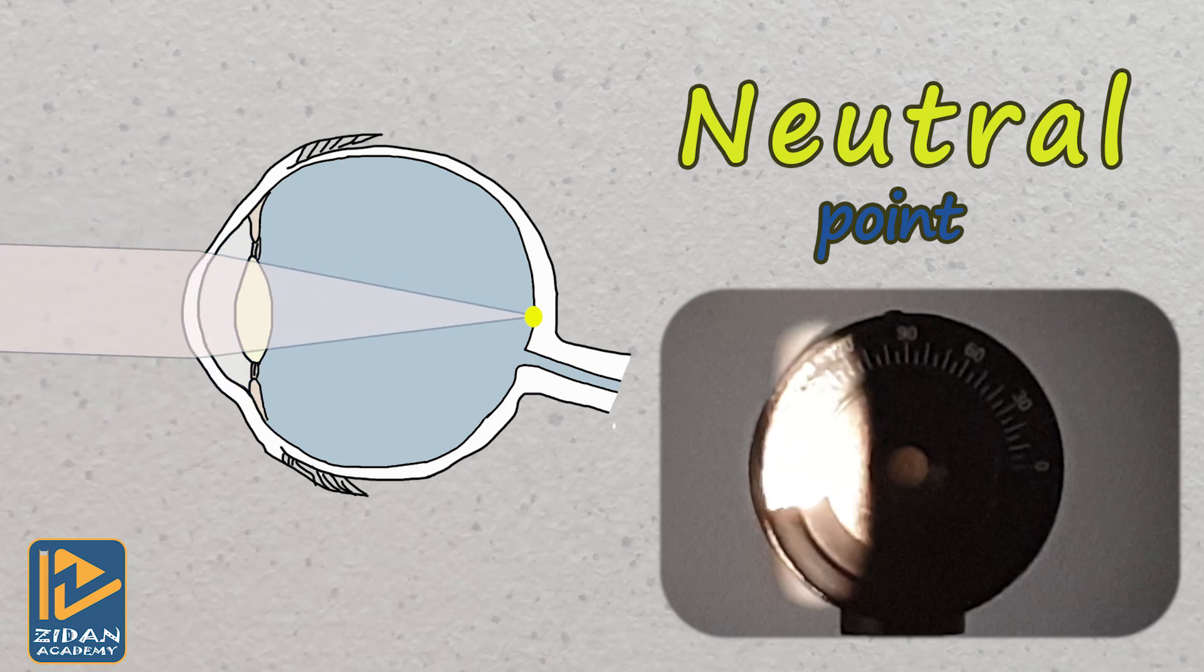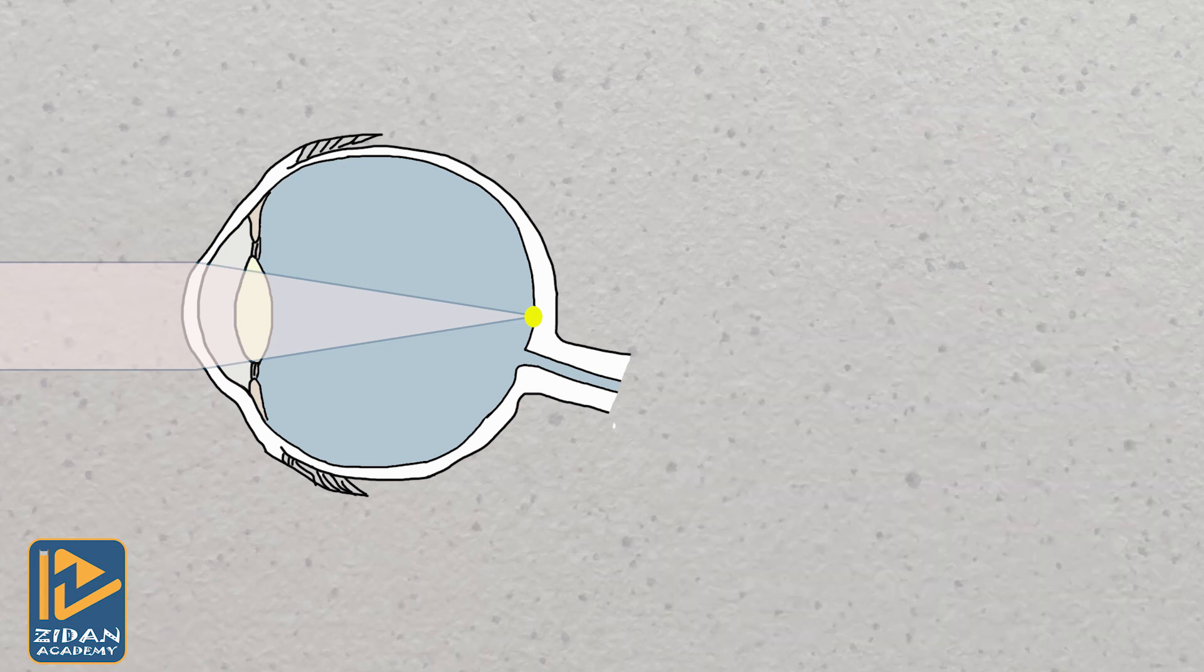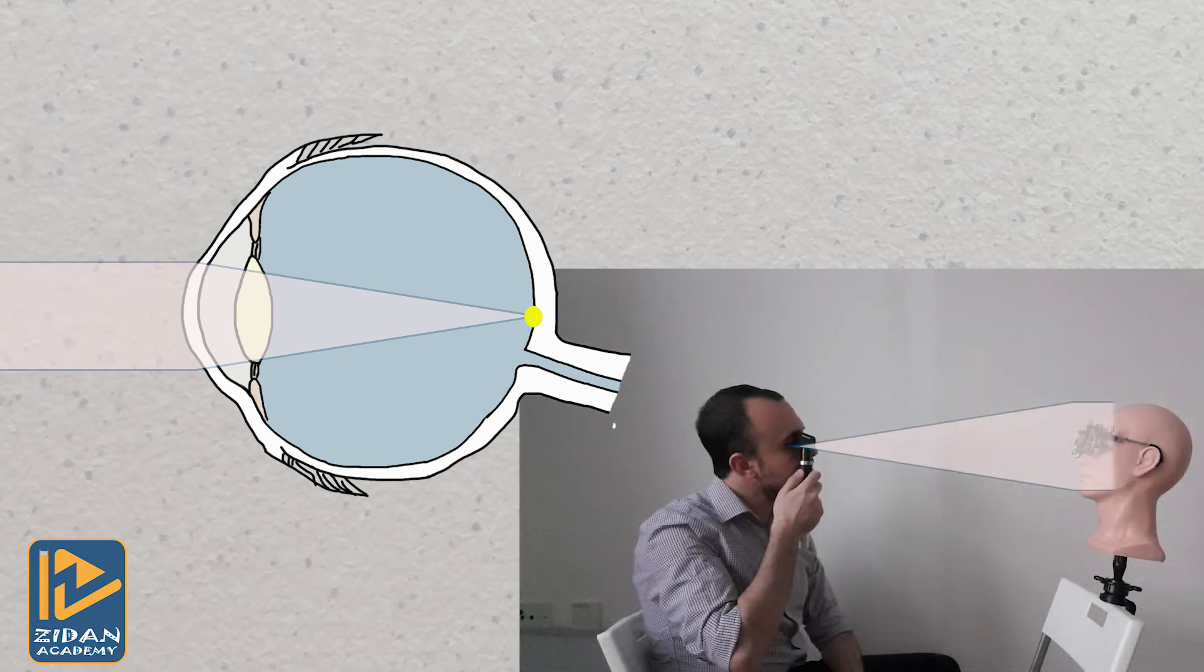Please keep in mind that all previous examples assume that the light is entering the eye parallel, which is not the case in reality, as retinoscopy light enters the eye slightly diverging. This amount of divergence depends on how far the retinoscope is from the patient's eye, and that's why we need to compensate for working distance, which I will talk about in detail later in this course.